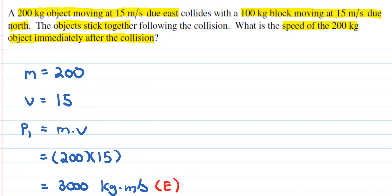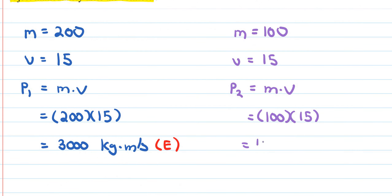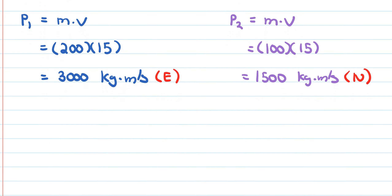The second object has a mass of 100 kilograms and its velocity is 15 meters per second due north. Momentum P2 is mass times velocity: 100 times 15, giving 1500 kilogram·meters per second going in the north direction.